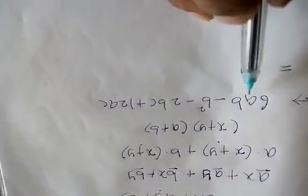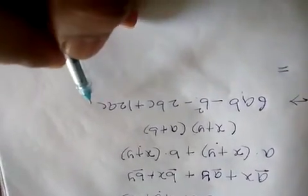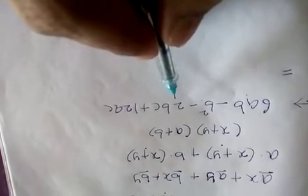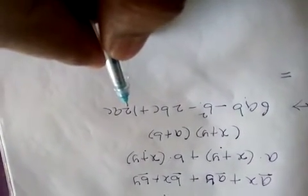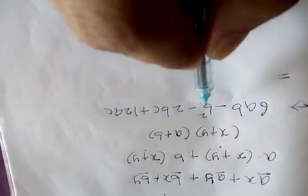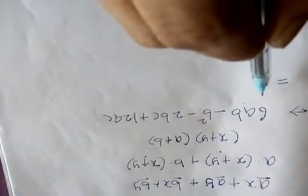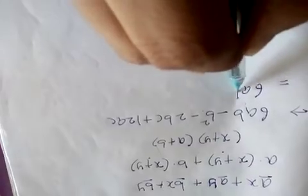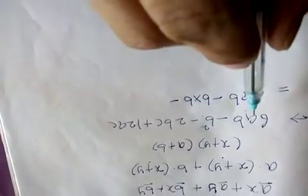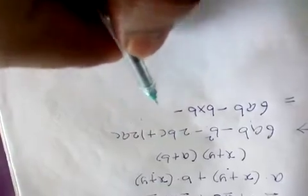In the first two terms, B is a common factor. In the last two terms, C is a common factor, and 2 is also a common factor because the terms are 2BC and 12AC, and 12 can be written as 2 into 6. We are grouping the first two terms as one subgroup and the last two terms as one subgroup.